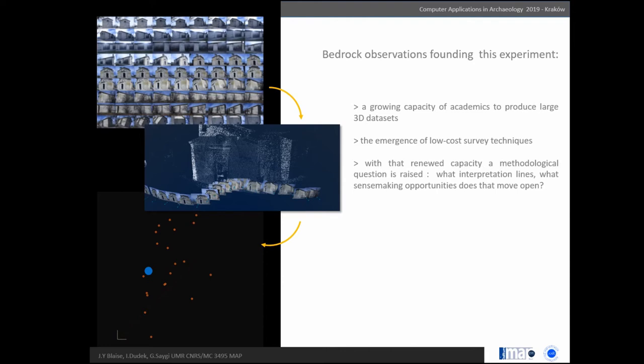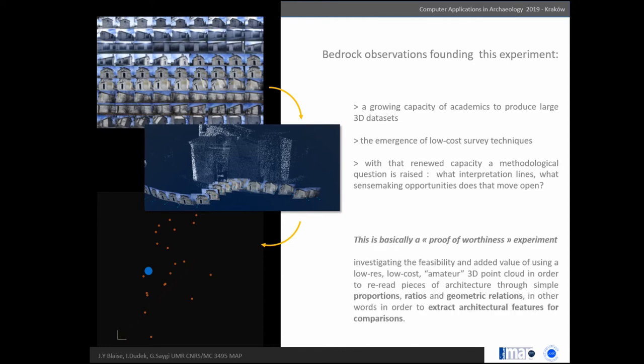This raises a new methodological question: what interpretation lines does that open? What new opportunities as researchers and analysts of architecture does that open? So this experiment is investigating the feasibility, but more importantly the added value, of using a low-cost 3D survey protocol to re-read pieces of architecture through proportions, geometrical relations, and ratios.